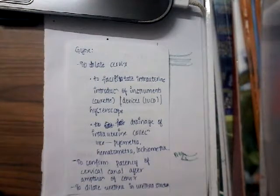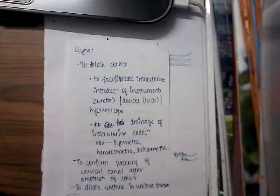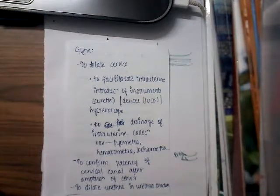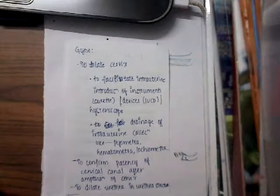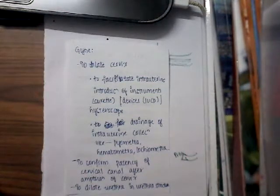Cervical dilators are also used to drain intrauterine collections such as pyometra, hematometra, or lochiometra. Additionally, they are used to confirm the patency of the cervical canal after amputation of the cervix, and to dilate the urethra in cases of urethral stricture.